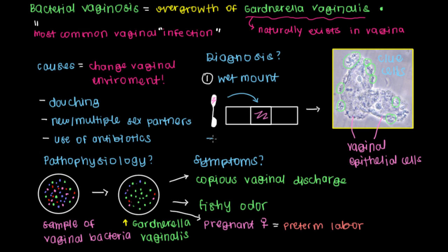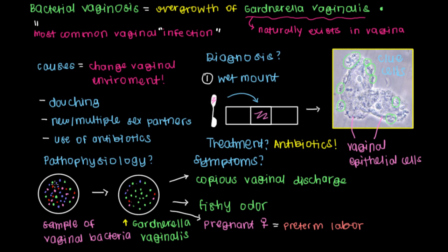Now that we've made our diagnosis, the next step would be treatment. Because Gardnerella vaginalis is a bacterium, you would treat it with antibiotics — to decrease the amount of Gardnerella vaginalis in the vagina and return to the normal population of bacteria that should be present there.